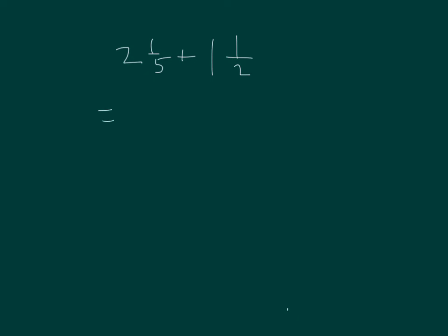This equals 2 plus 1 fifth plus 1 plus 1 half. Adding our whole numbers, 2 and 1, that's equal to 3 plus 1 fifth plus 1 half.